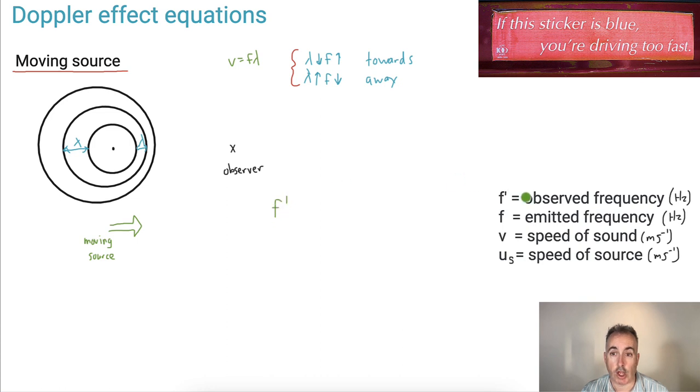F prime, so that's the observed frequency of the sound, is equal to the emitted frequency of the sound times - now this is going to be V over V. Interestingly enough, it goes plus minus U_S. I'll explain this in a second. So what do we do with this? First of all, let's look at what each of these variables mean.